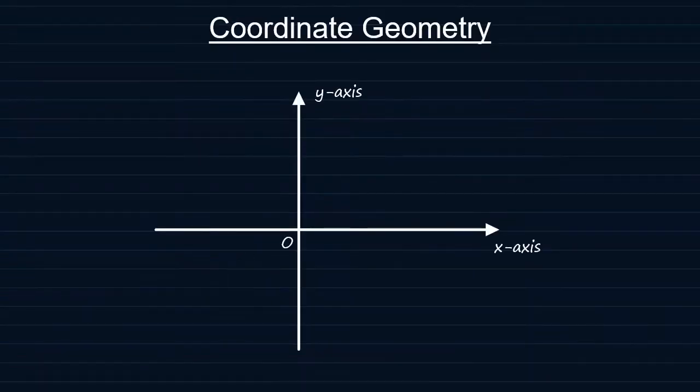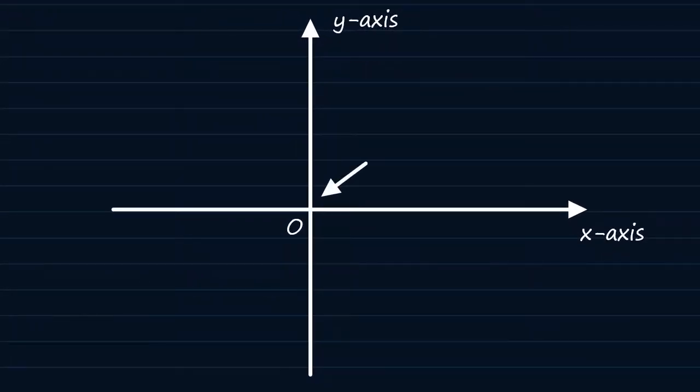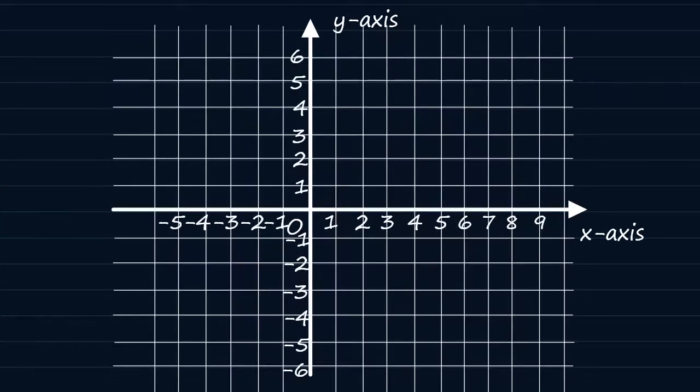So any point on the Cartesian plane has its own distinct set of coordinates. The origin, for example, has coordinates 0, 0. While this point here, point A, has coordinates 2, 5. This is because its position corresponds to 2 on the horizontal axis and 5 on the vertical axis.